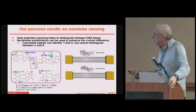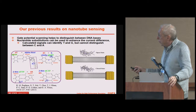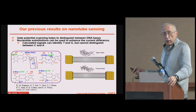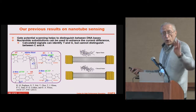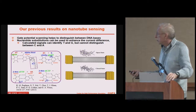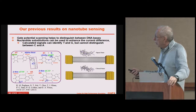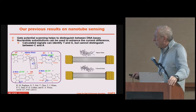But it turned out not quite. We added gate scanning, and we can identify T and G. We can also say it's either C or A, but we cannot distinguish between C and A. We did those calculations but still have to write them up.